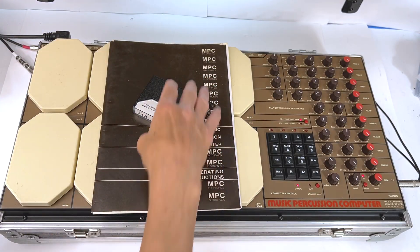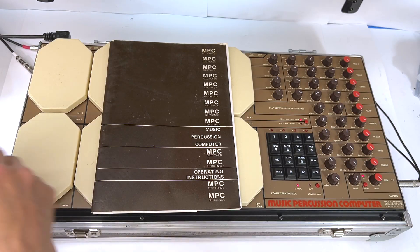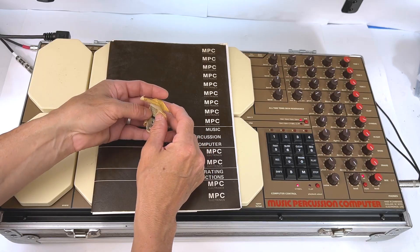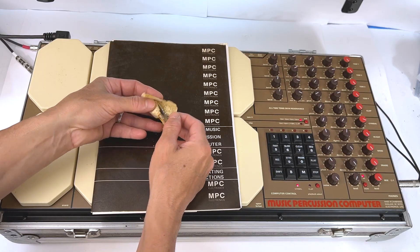It came in this hard case. It's got the bottom half here—I will possibly show the top half in a second. But the key for the case, so you could lock it, has never even been opened. Looks like there's two keys in here.